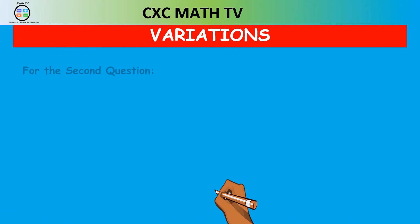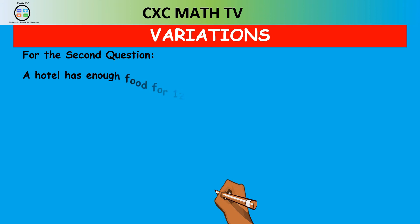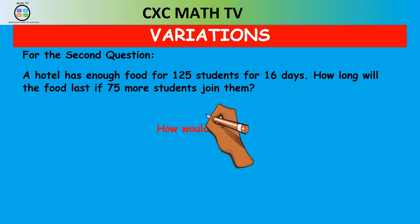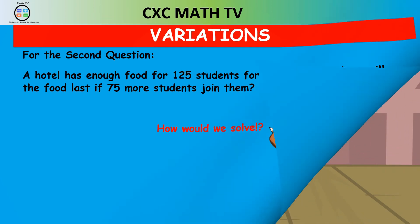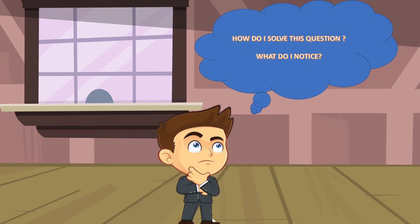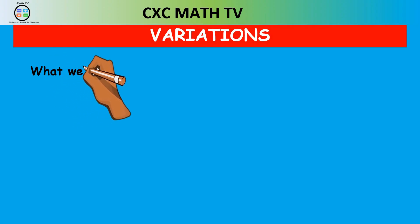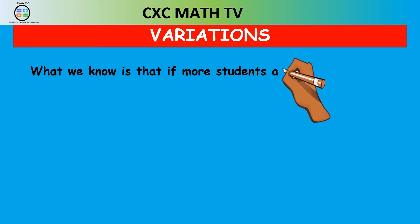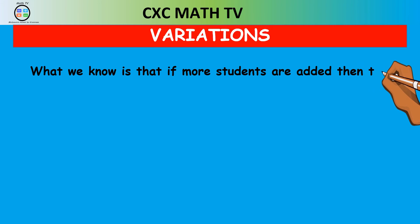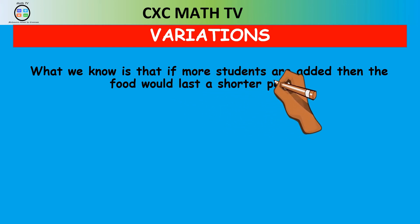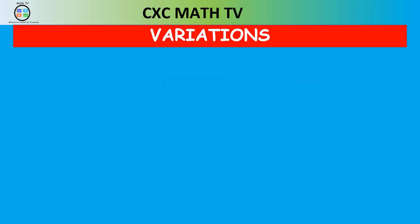Now let's look at another question: a hotel has enough food for 125 students for 16 days. How long will the food last if 75 more students join them? What do we observe? If more students are at the hotel, the food is going to last a shorter period of time. If a certain amount of food lasts 16 days and you add more people, the food will last fewer days. This is known as inverse variation.